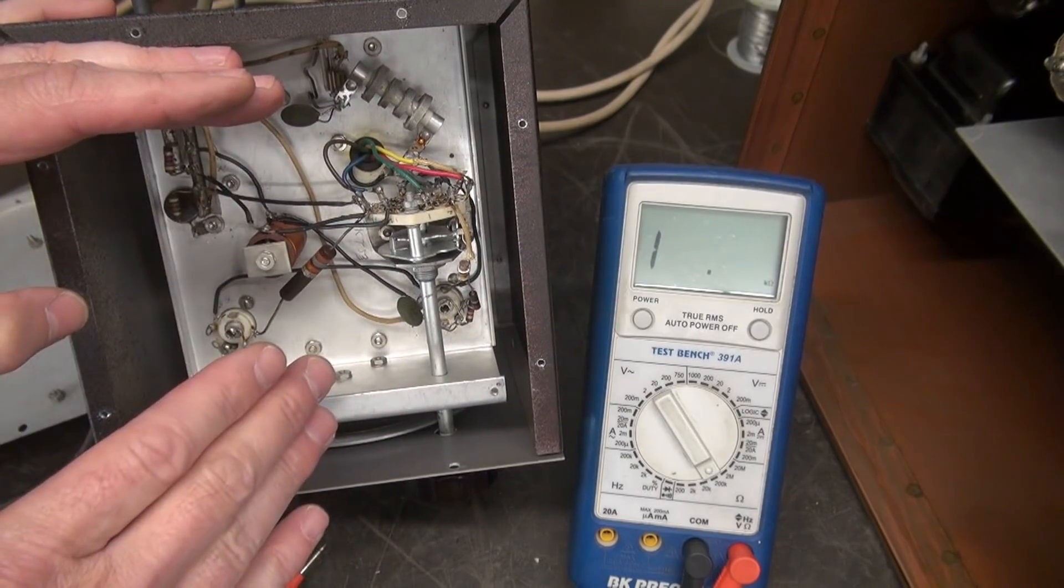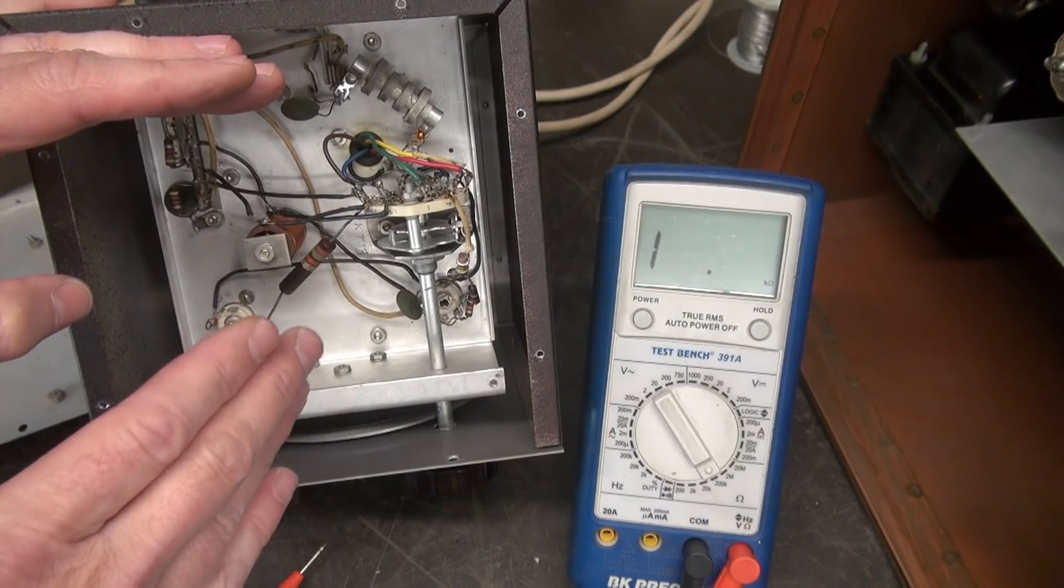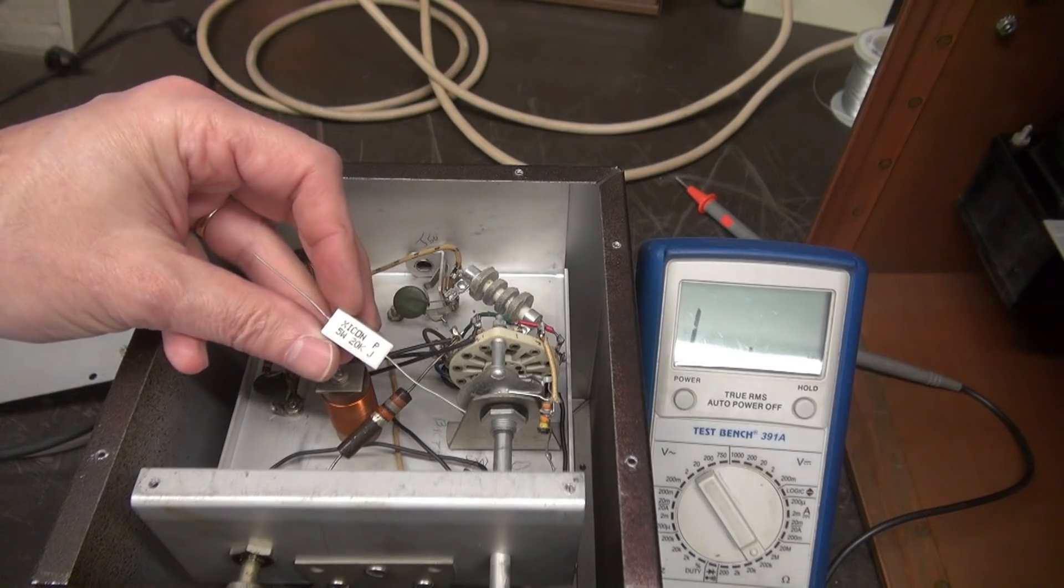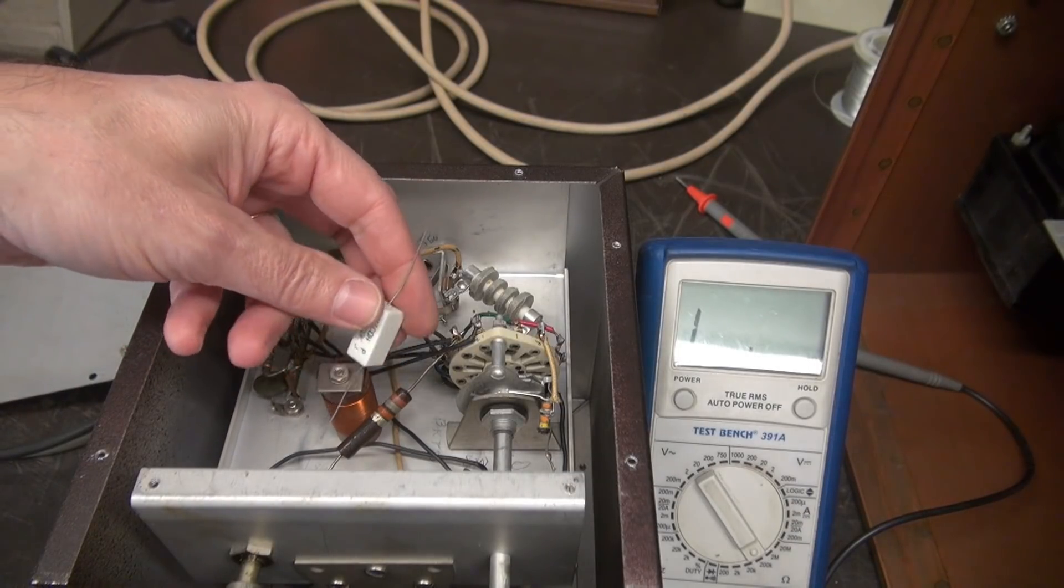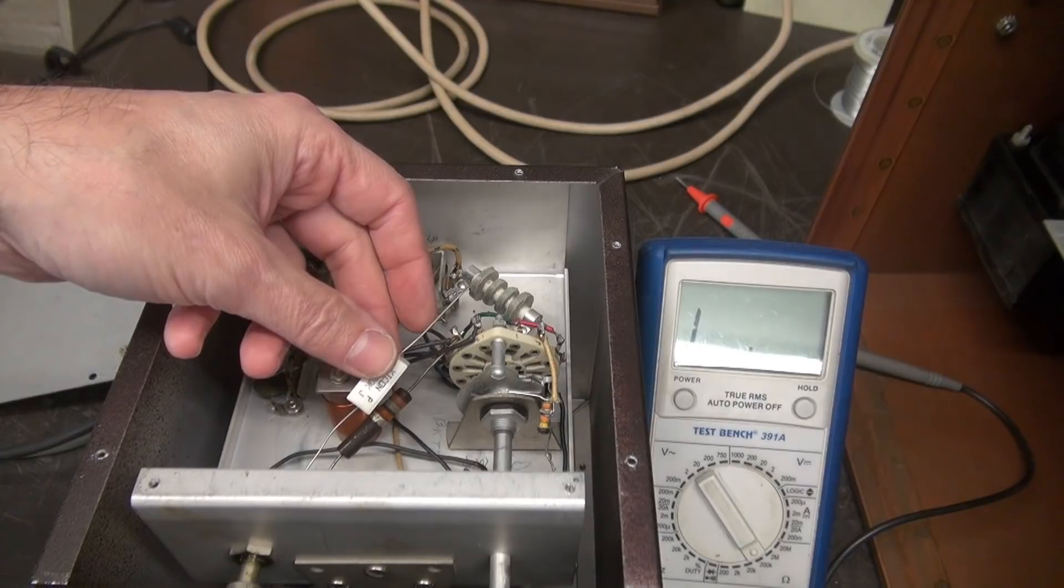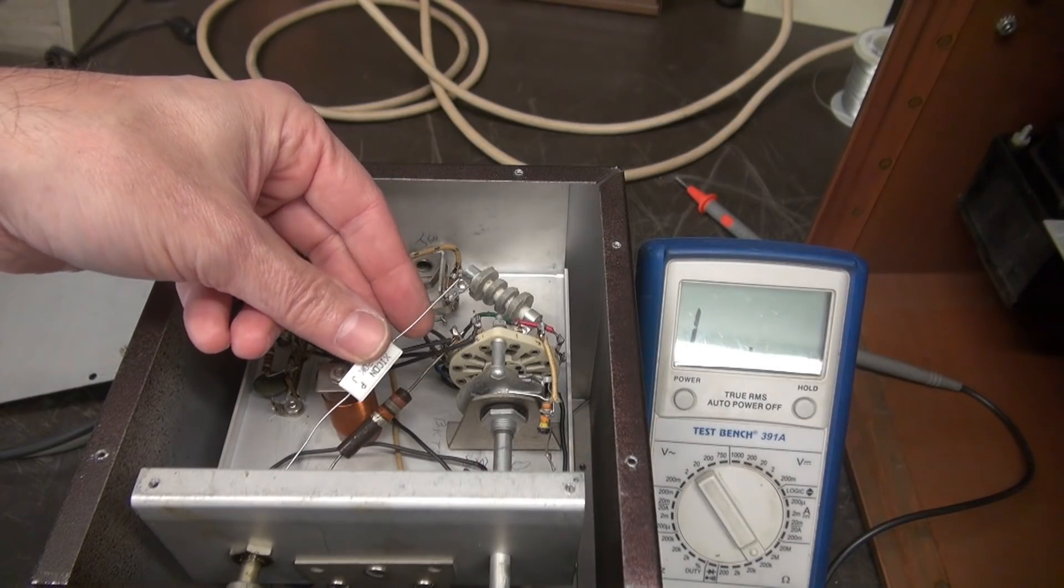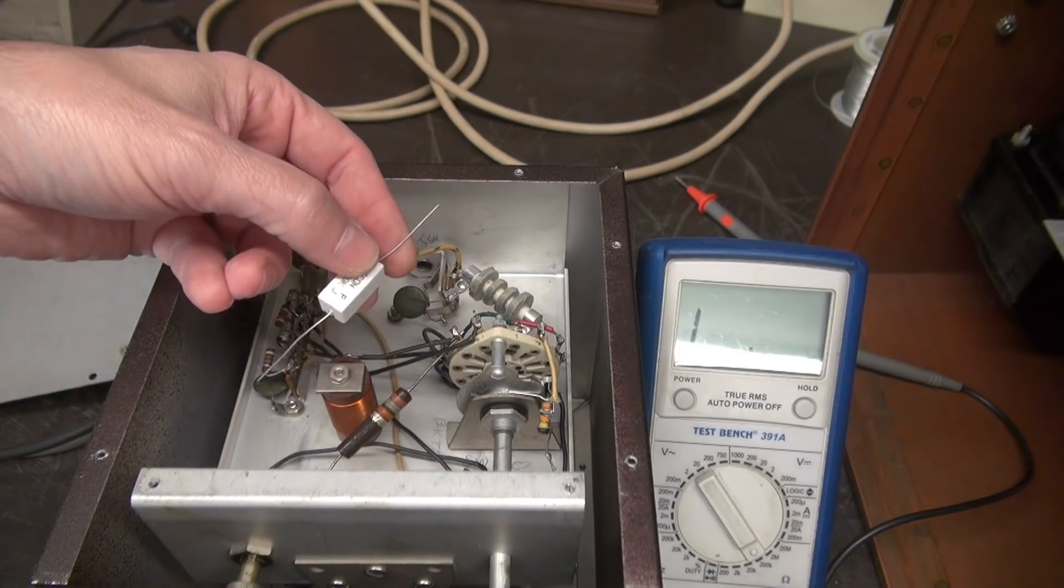So if you have a VFO 122, check and change that resistor. I don't even care if it measures good, change it out with a wire wound 20K 5-watt resistor. That's what we're going to do. So here is the new resistor going to go in place of the old cigar. And then that will eliminate the possibility of it going up in flames, but the biggest benefit is you won't have a drifty chirpy VFO.